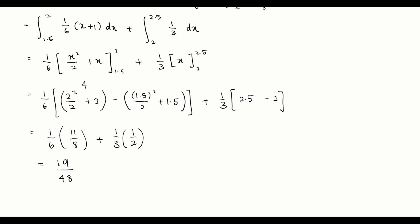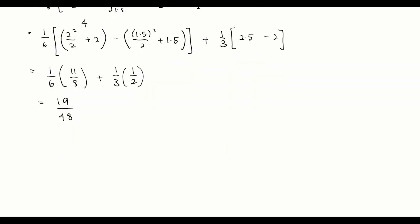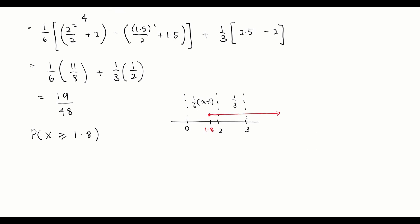So the probability of x between 1.5 and 2.5 is 19/48. For the second part of (c), we find the probability of x greater than 1.8. Drawing a number line, 1.8 is between 0 and 2. We could integrate from 1.8 to 2 and from 2 to 3, or use the complement method.